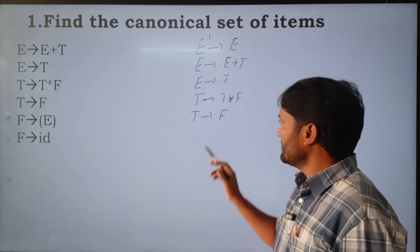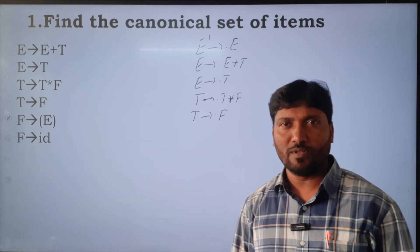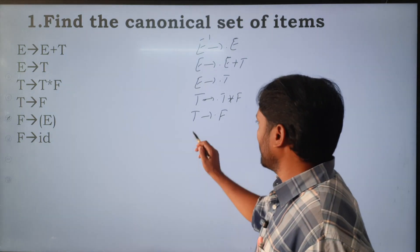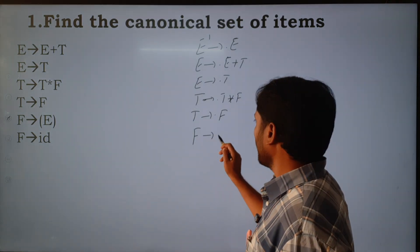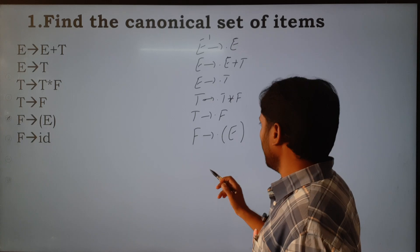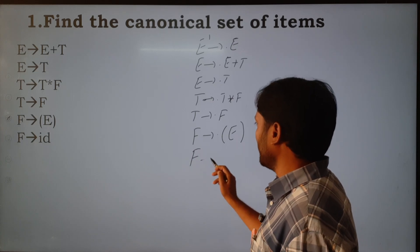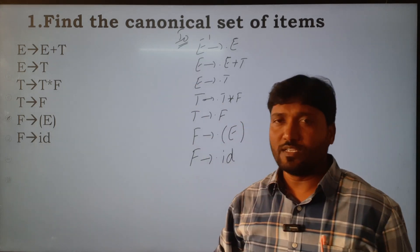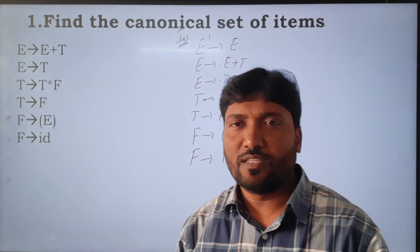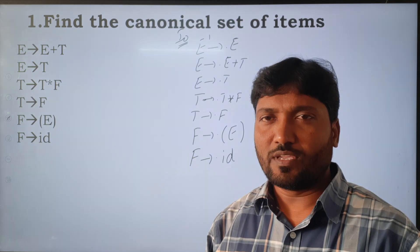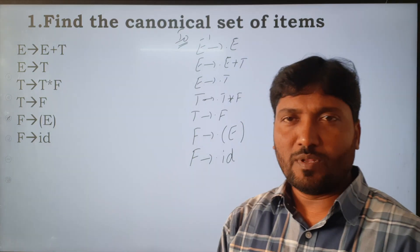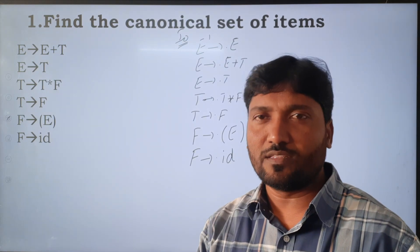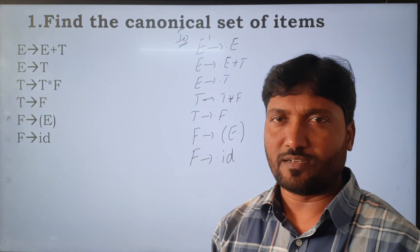T is over, and next is capital F. Capital F is also a non-terminal symbol. F has two productions; we add those with dot: F derives .(E) and F derives .id. This is called the closure of I0.